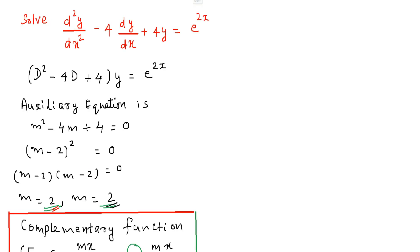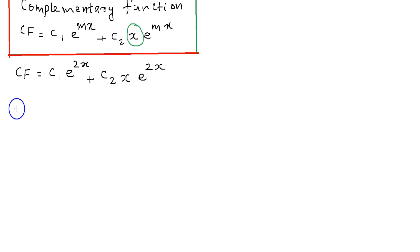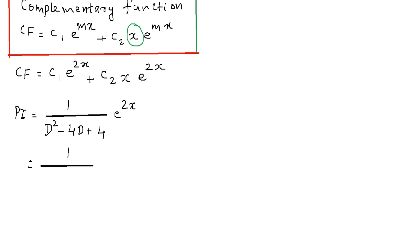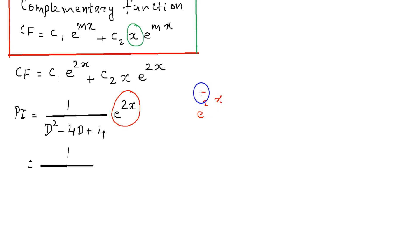Now we need to find the particular integral. The particular integral is equal to 1/(D² - 4D + 4) · e^(2x). Here we have an exponential function e^(2x). Replace all occurrences of D in the denominator with the coefficient of x in the exponential function e^(2x), which is 2.